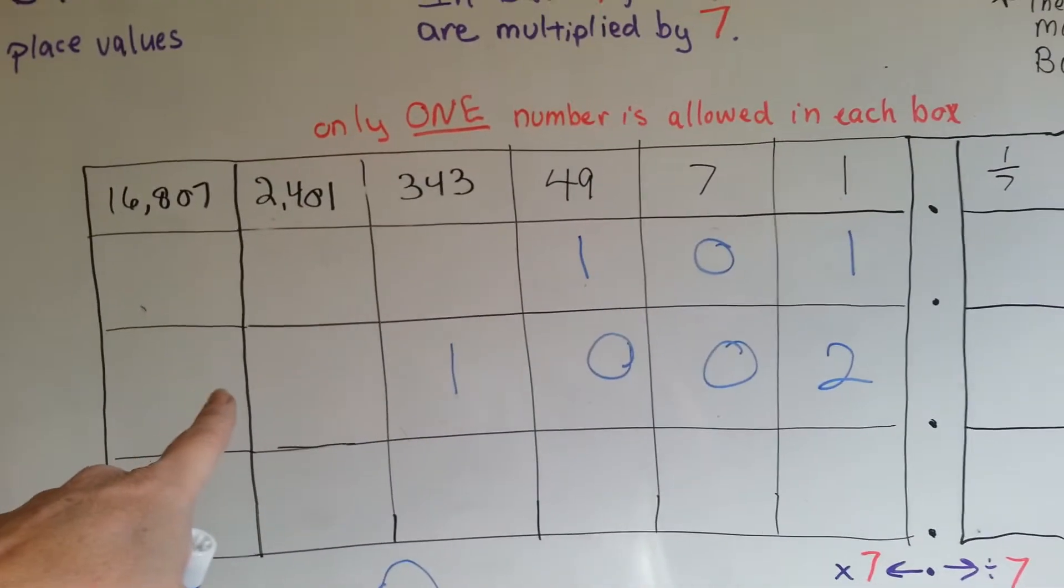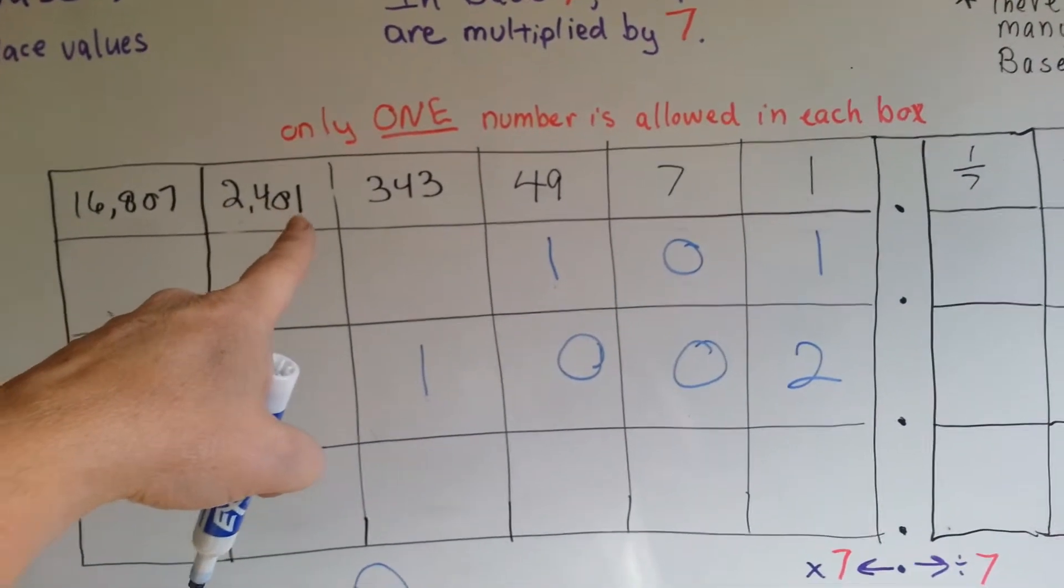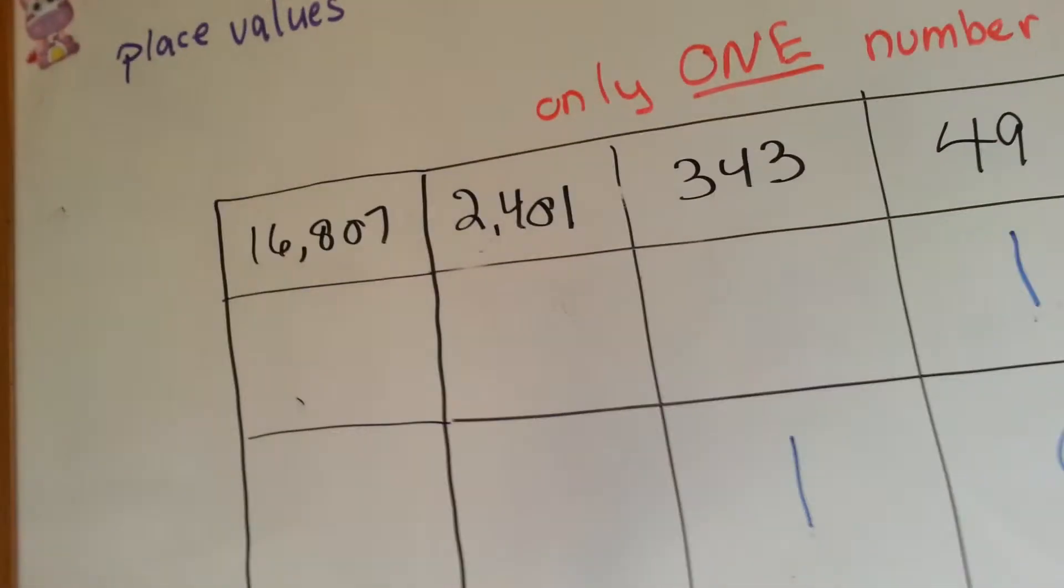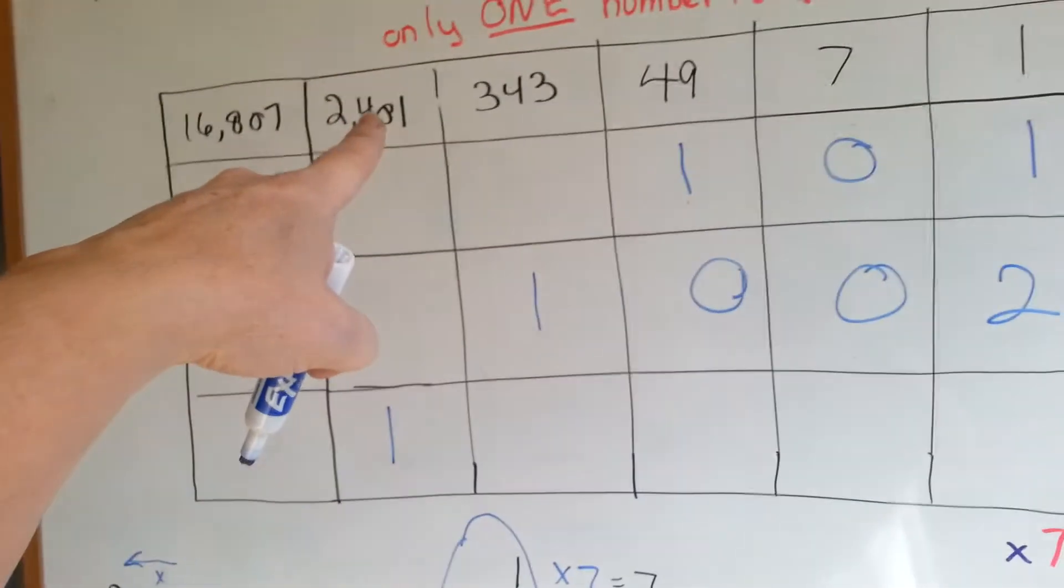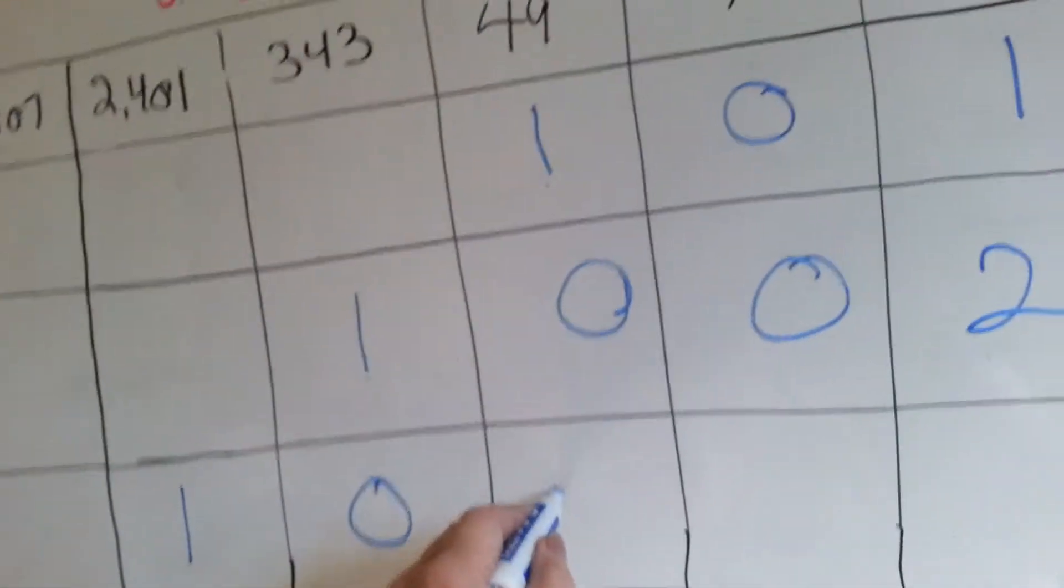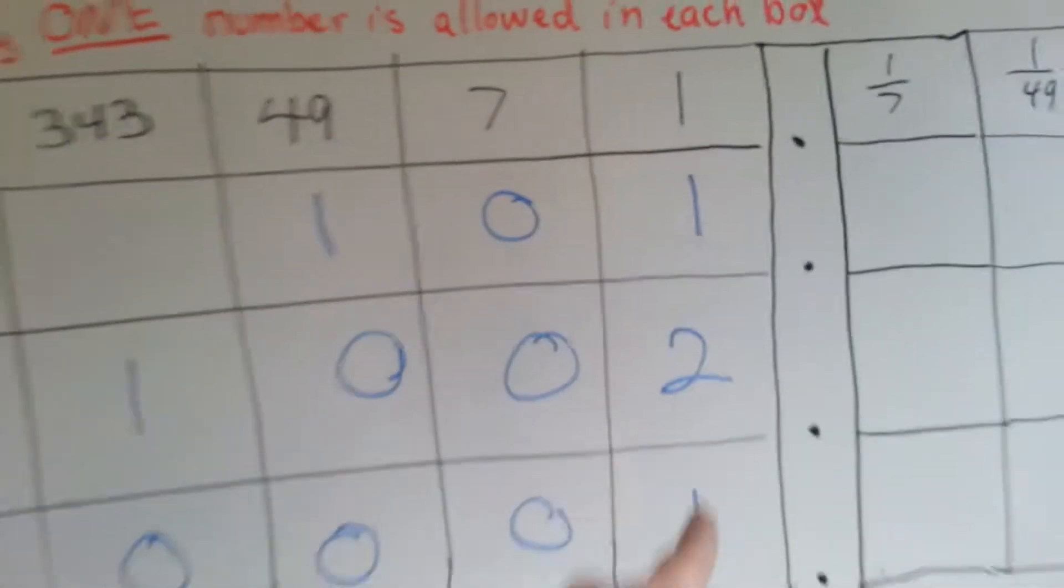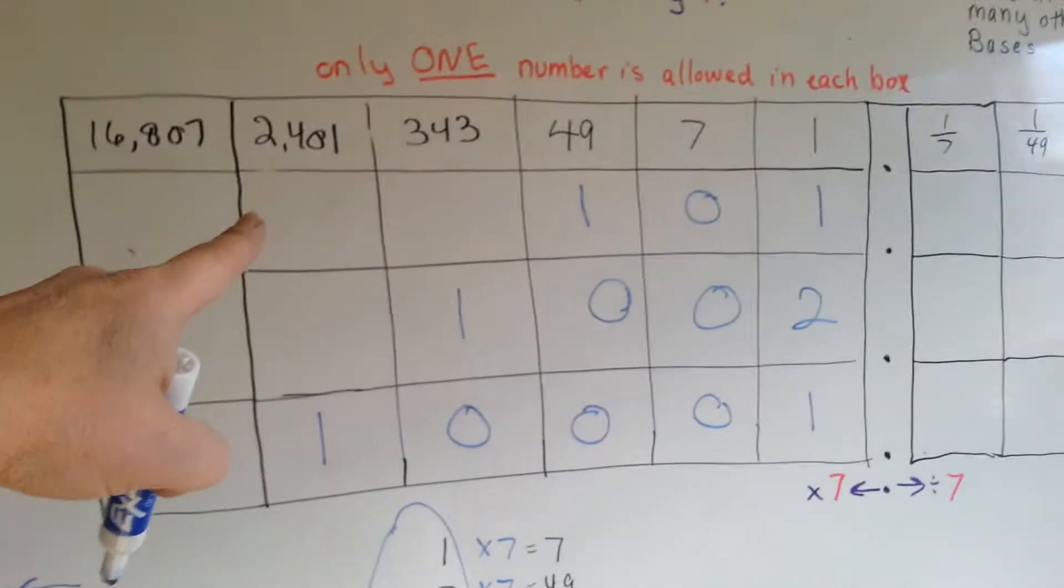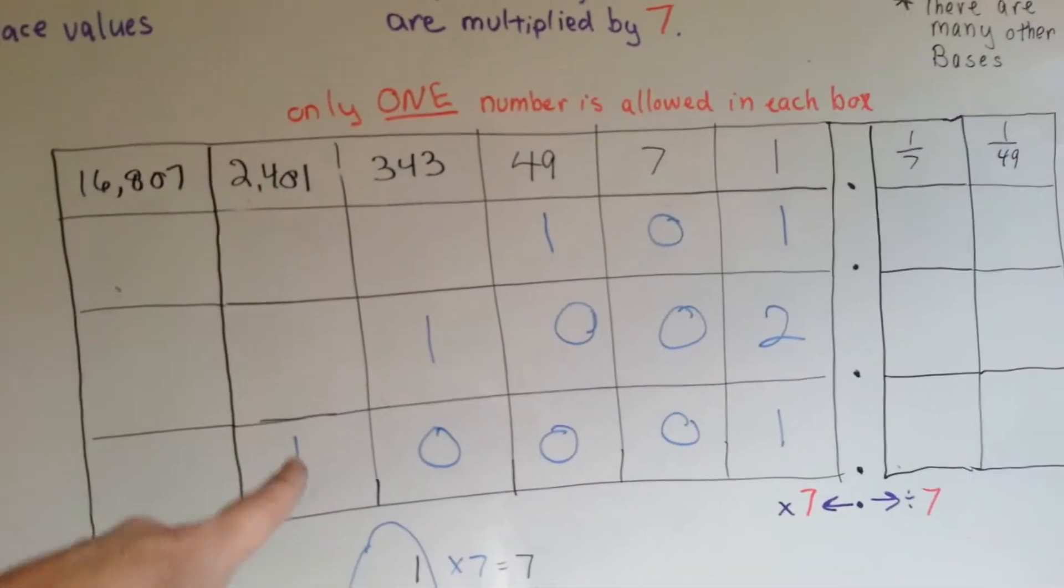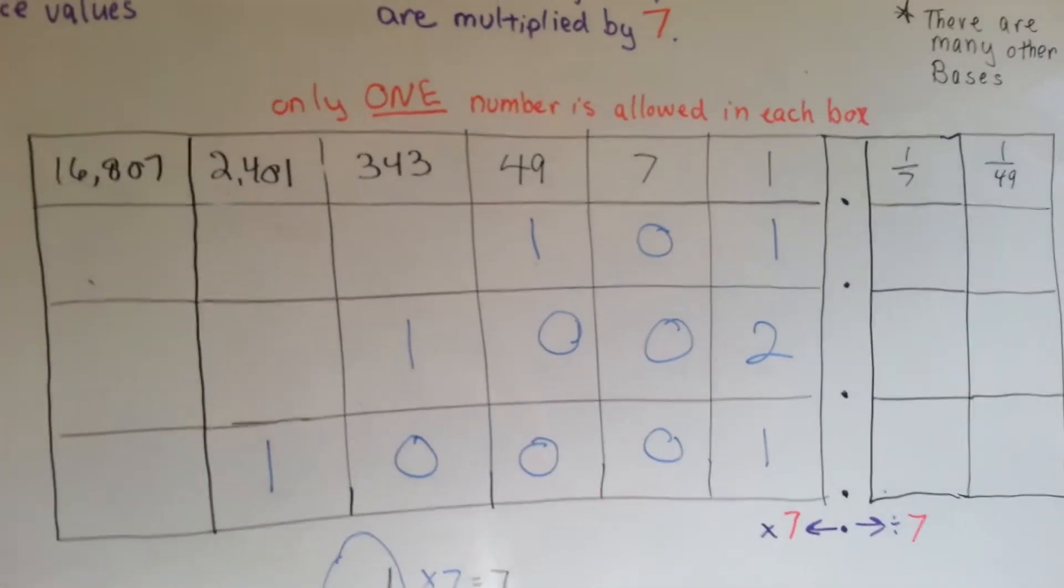If we wanted to say two thousand four hundred and two, we would have one 2401, no 343s, no forty-nines, no sevens, but we would have one one. And that's how you would say two thousand four hundred and two in base seven.